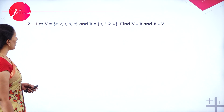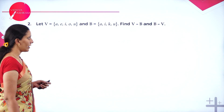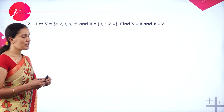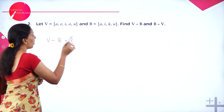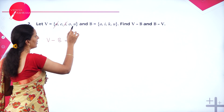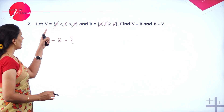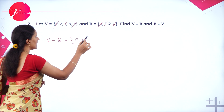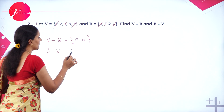Next example: let V equal {A, E, I, O, U} and B equal {A, I, K, U}. Find V minus B and B minus V. The common elements are A, I, and U — we remove these from both sets. V minus B contains only E and O, the elements in V not in B. B minus V contains only K, the element in B not in V. Remember V minus B cannot equal B minus V — they are completely different.